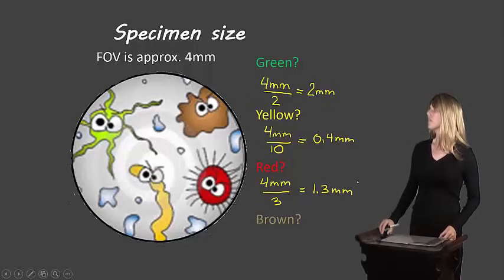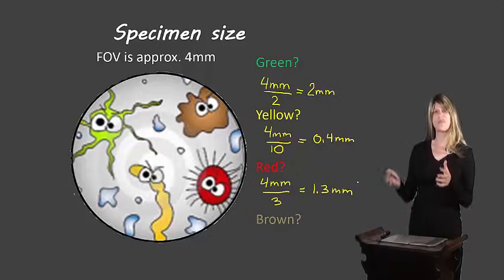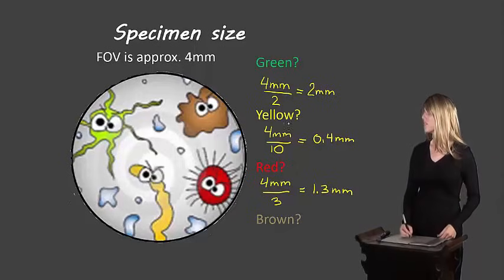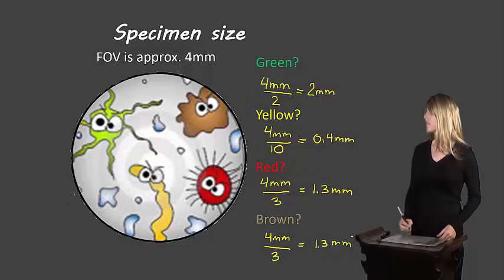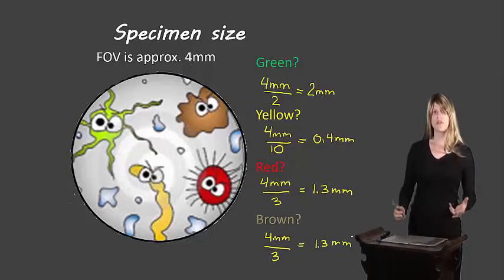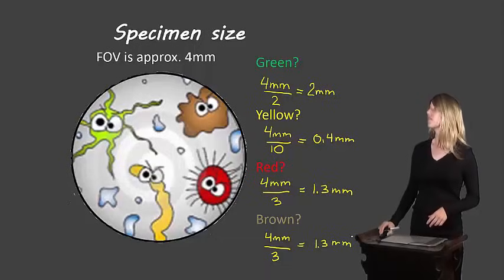And then the last one, the brown one — about 3 would fit across for that one too, so it would be the same calculation: 4 millimeter field of view divided by 3 specimens gives us 1.3 millimeters per specimen. So that's how we would calculate the specimen size.